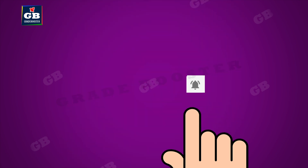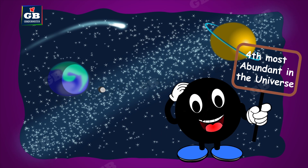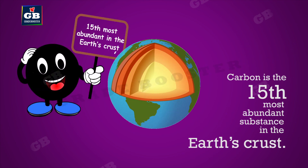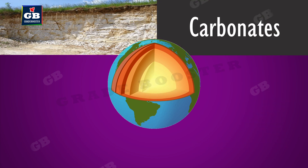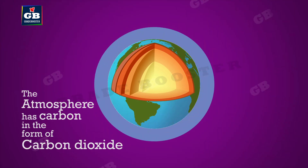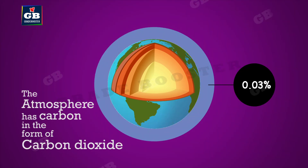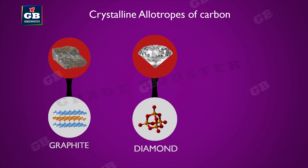Carbon is the fourth most abundant substance in the universe and the 15th most abundant substance in the earth's crust. The earth's crust has 0.18 percent of carbon in the form of minerals like carbonates, coal, and petroleum, and the atmosphere has 0.03 percent of carbon dioxide.